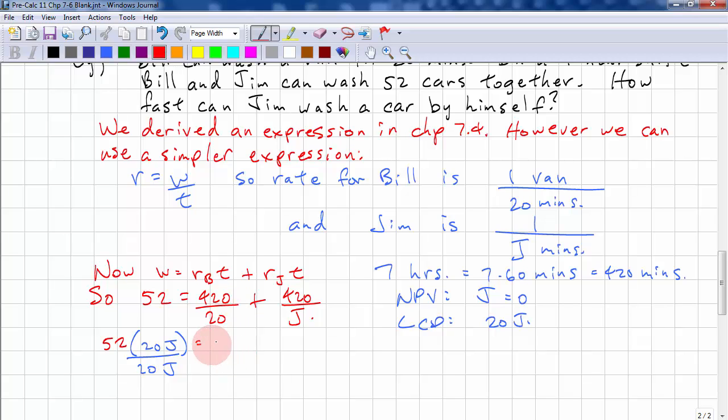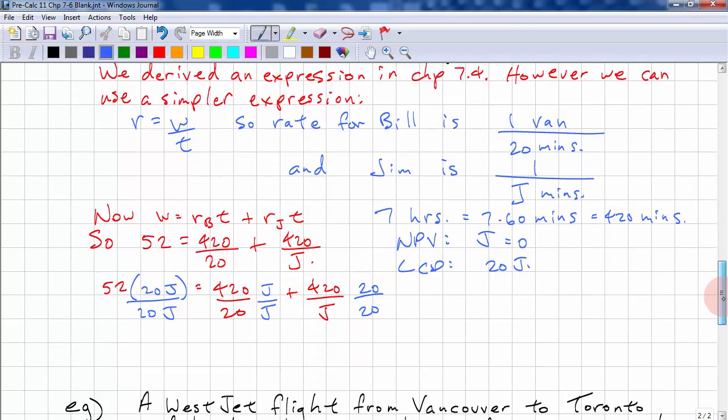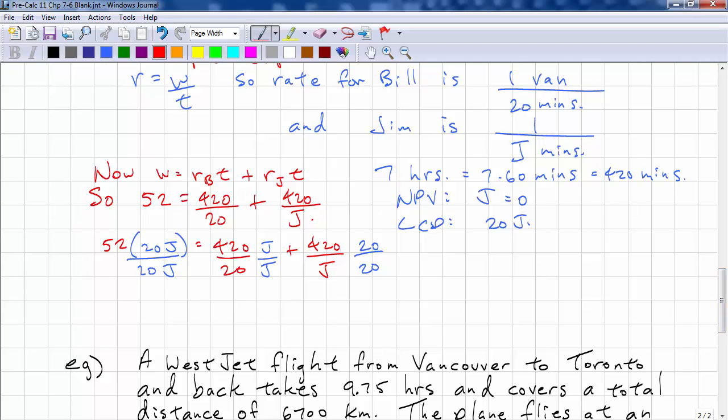Here, we need to just multiply by J. 420 over 20 and we have J over J. And here, we just need to multiply by 20, 20 over 20. Now we just expand. And we know the denominator is going to go away. So we have 1040J equals 420J plus 8400.